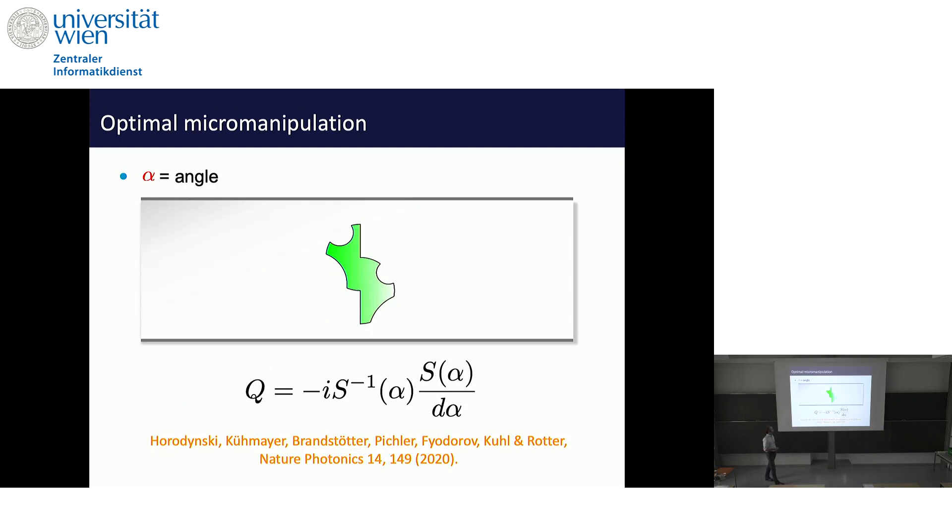The question is only which momentum and which angular momentum are we talking about here? I will show you now. For example, let's assume we have some kind of an object. Think of a microparticle of a certain shape. You measure the scattering matrix, for example, if this microparticle is in a waveguide or somewhere else, and then you turn the particle a little bit, such that you can take the derivative with respect to the angle.